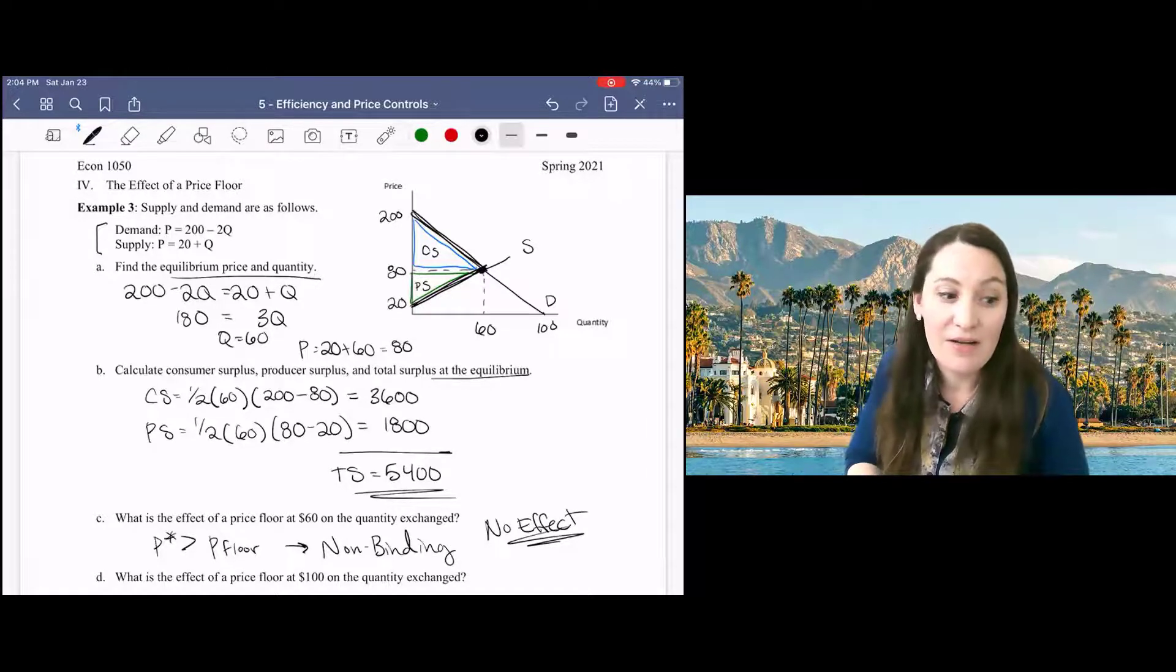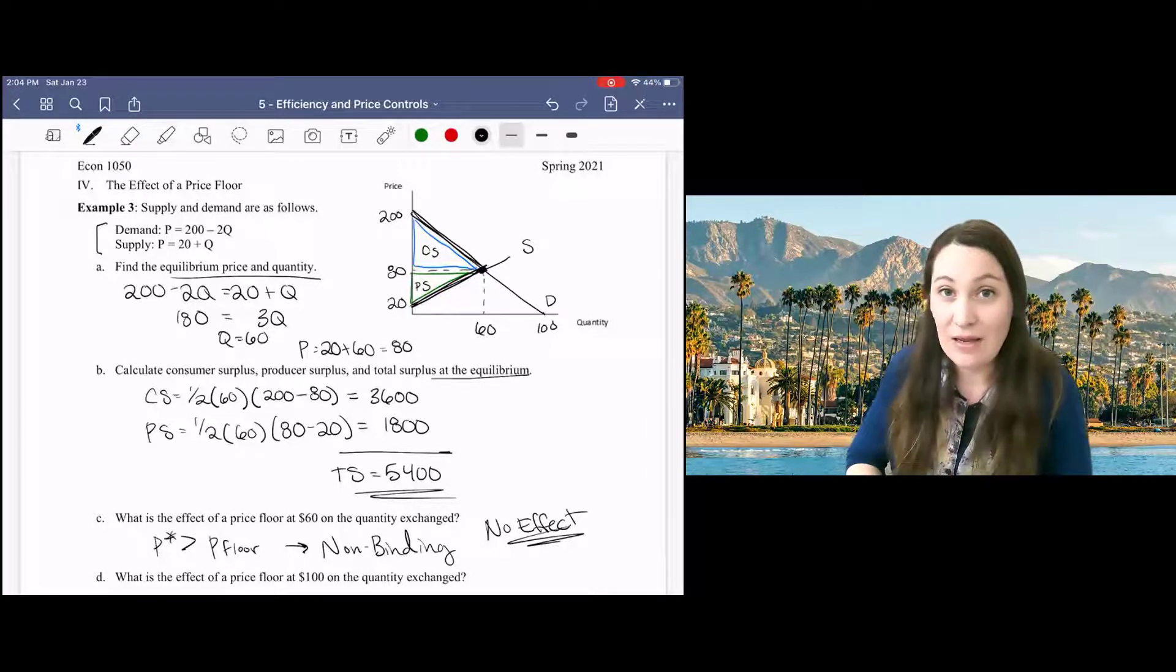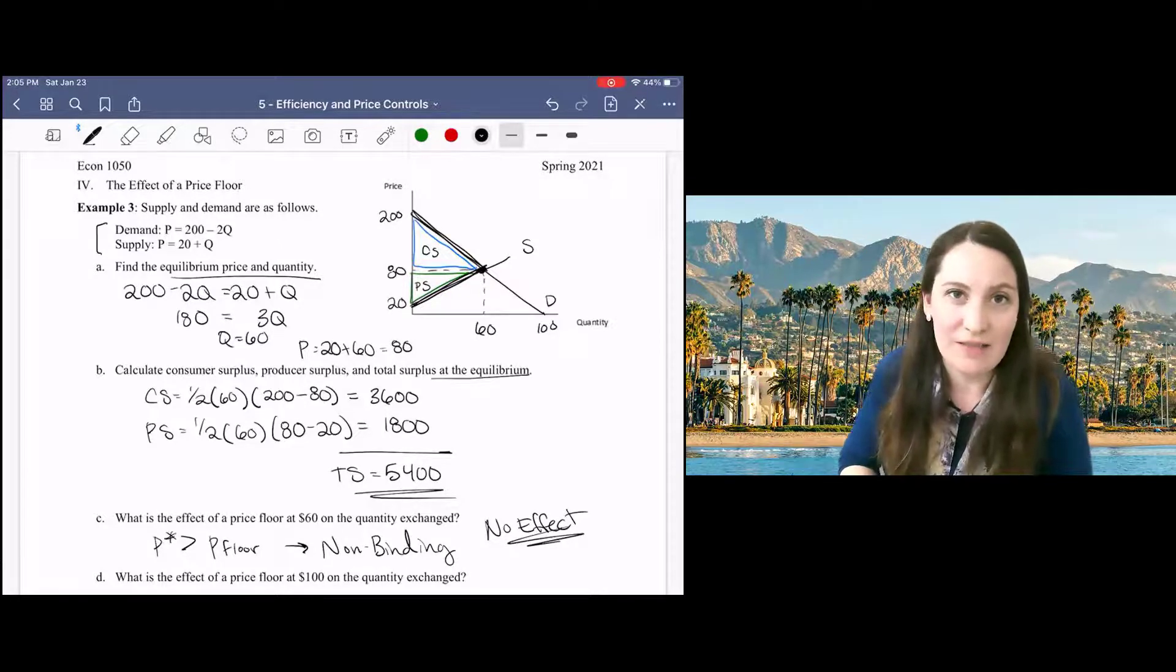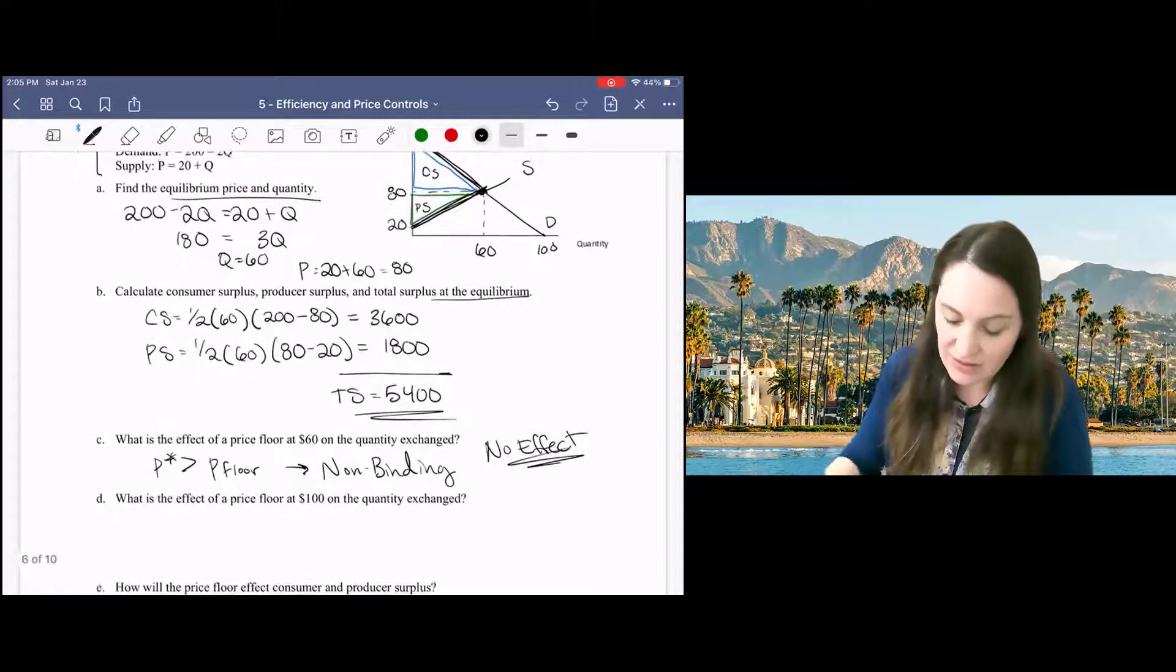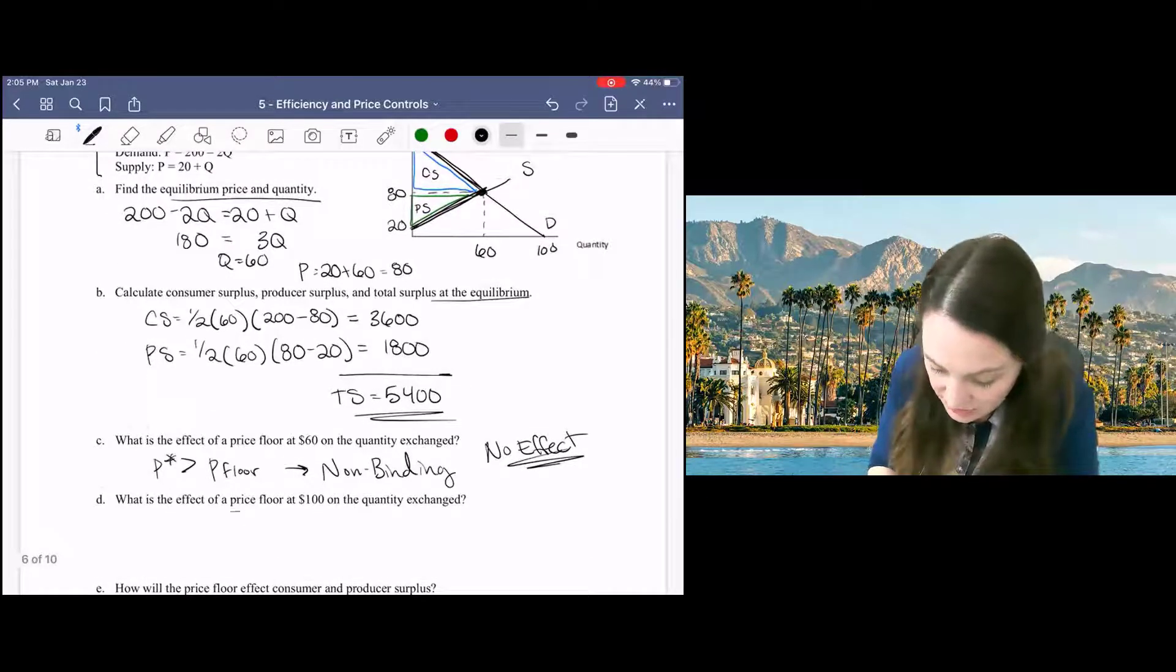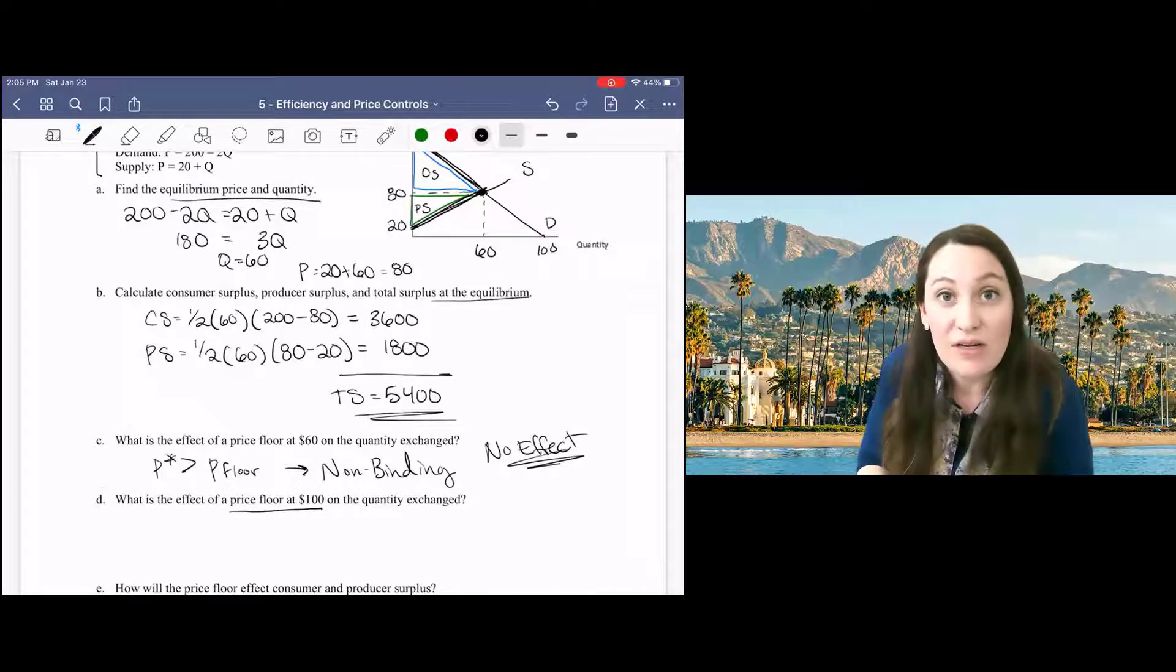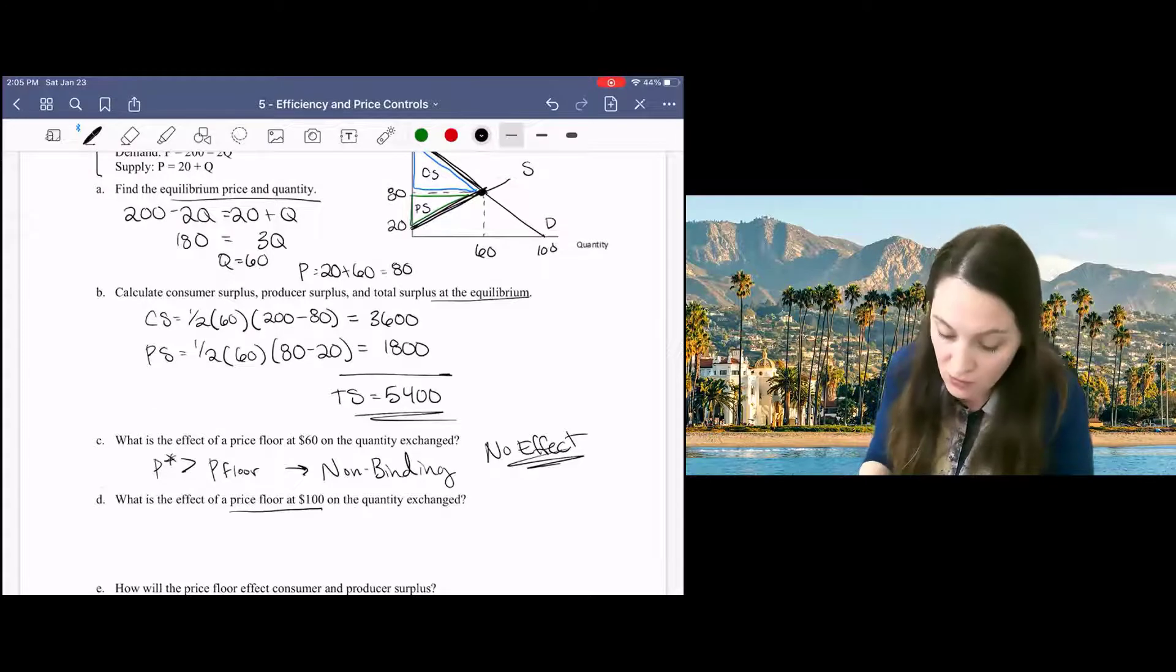However, if the equilibrium price falls below the price floor, that's not legal anymore and there will be an effect on the price and the market. So, in Part D, we say, now suppose the government institutes a price floor at 100. This will constrain the market so that the price cannot drop below 100.